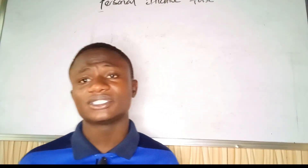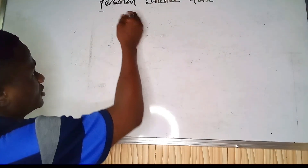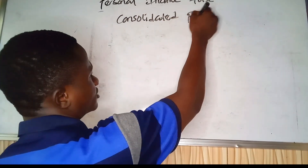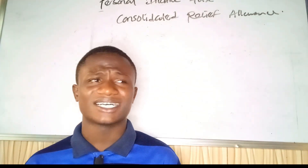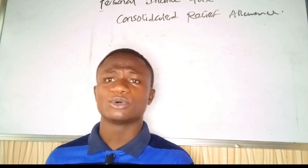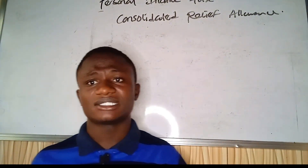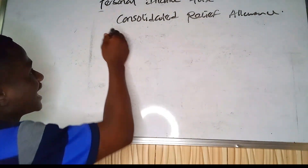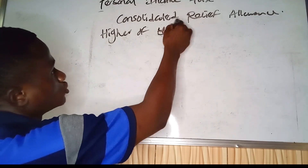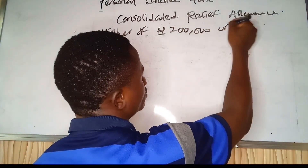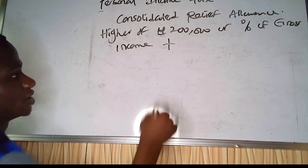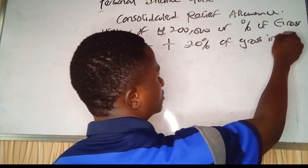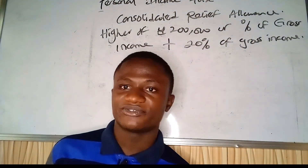The next thing we need to talk about is the Consolidated Relief Allowance. From the way the name implies, relief means to ease burden. Government eases individuals' tax burden by giving them relief. The Consolidated Relief Allowance is the higher of 200,000 Naira or 1% of gross income, plus 20% of gross income.